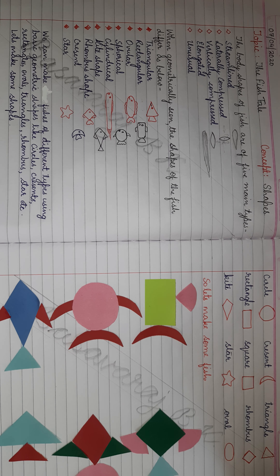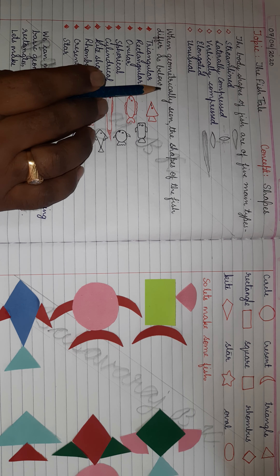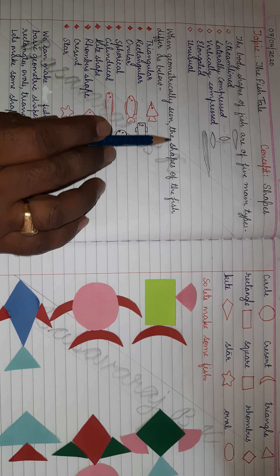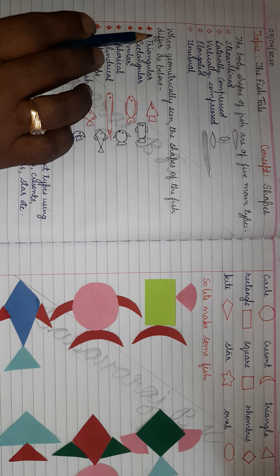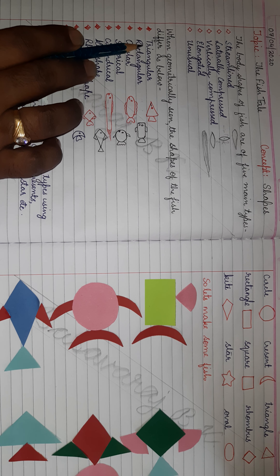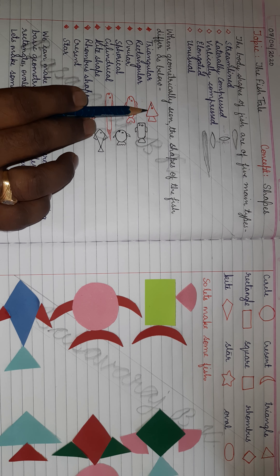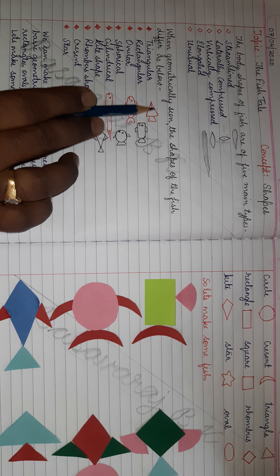And some fish are of unusual shapes, like puffer fish which is spherical in shape, and seahorse which is of a different shape. There are many kinds of fishes with unusual shapes.